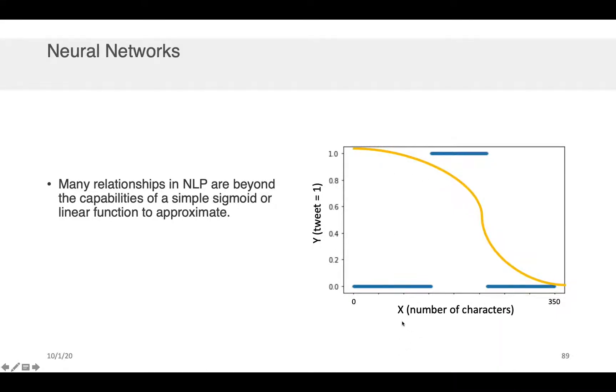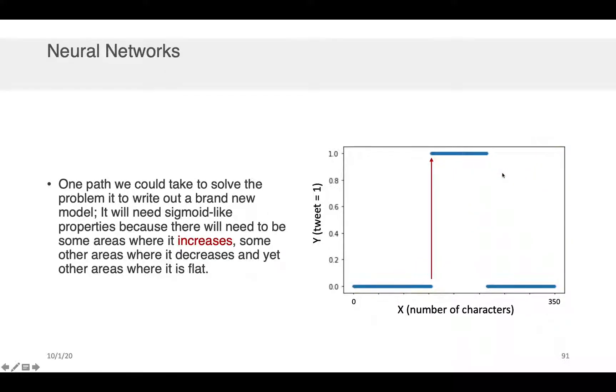So, for example, consider this problem here where I have some data x, which represents the number of characters in some text. And I want to use this to predict whether an object is a tweet or not. So, one here represents yes it's a tweet, and zero here represents no it's not a tweet. And these blue points here represent data points in some training data set that I have. Well, it doesn't matter how hard I try to fit a sigmoid to this. There's just no way to represent the relationship between x and y just because of the way a sigmoid is shaped.